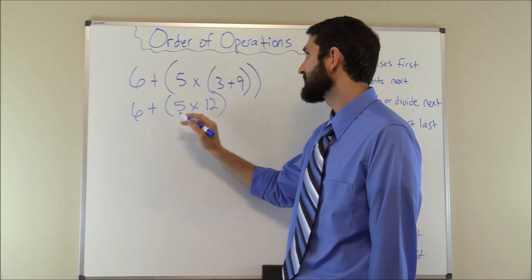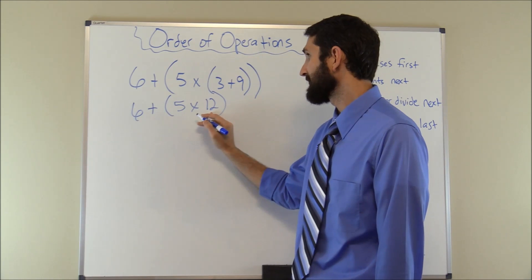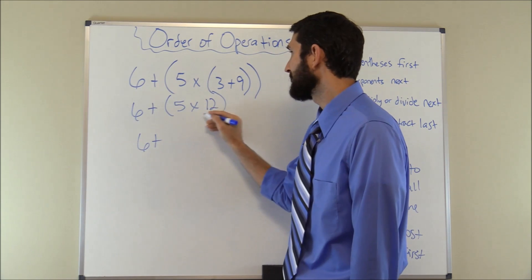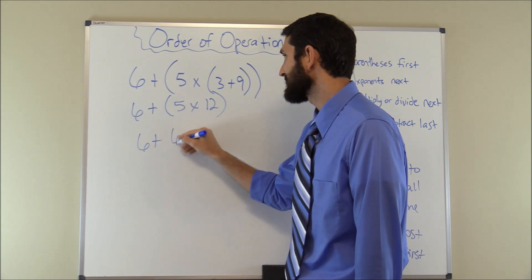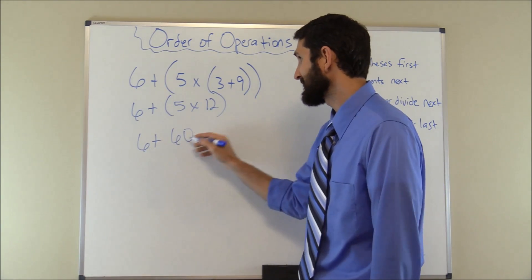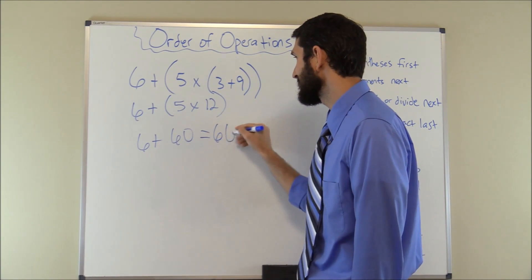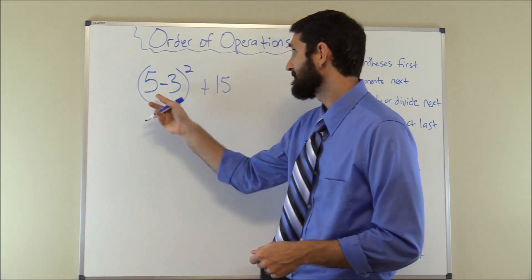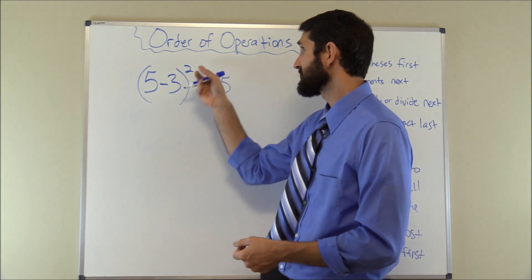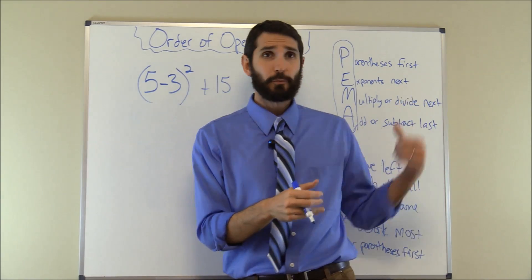Next, we again solve the parentheses — because that comes first — but now we handle the remaining grouping: 5 × 12 = 60. So we have 6 + 60, and 6 + 60 = 66.